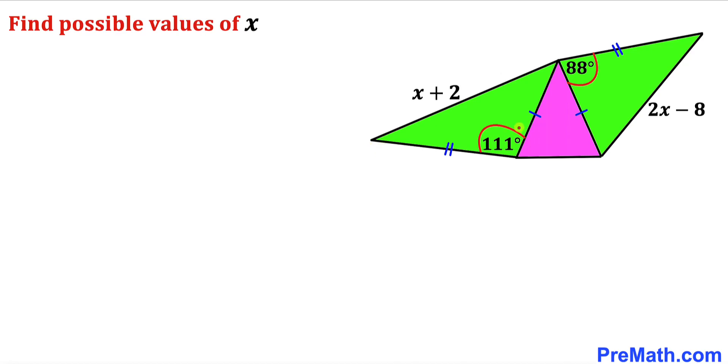Welcome to pre-math. In this video we have three triangles as you can see in this diagram, such that two of our angles are 111 degrees and 88 degrees with the side lengths x plus 2 and 2x minus 8 respectively.